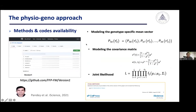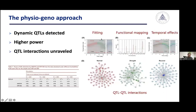Here are the mathematics — today I'm not giving too many details, but you can refer to the star methods of our recent publication in the iScience journal; all the codes are available from GitHub. The most important steps include modeling of the genotype-specific mean vector, modeling the covariance matrix, and then using a maximum likelihood method to test whether QTLs exist underlying the trait variations. These are the results showing data fitting, and this figure shows the result of functional mapping. Four QTLs were identified, with the one with the largest effect on chromosome 11.